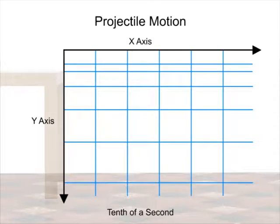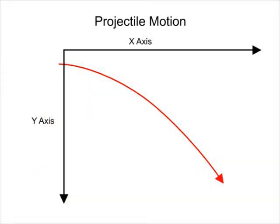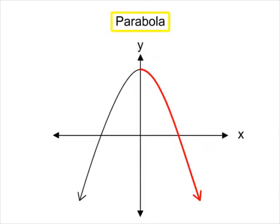The curvature of the ball's trajectory is the combination of its constant horizontal motion and its increasing vertical motion. Mathematically speaking, the outline of this path is known as a parabola.